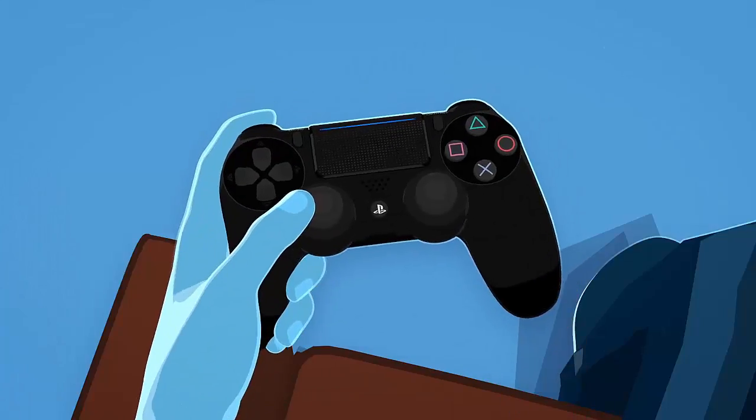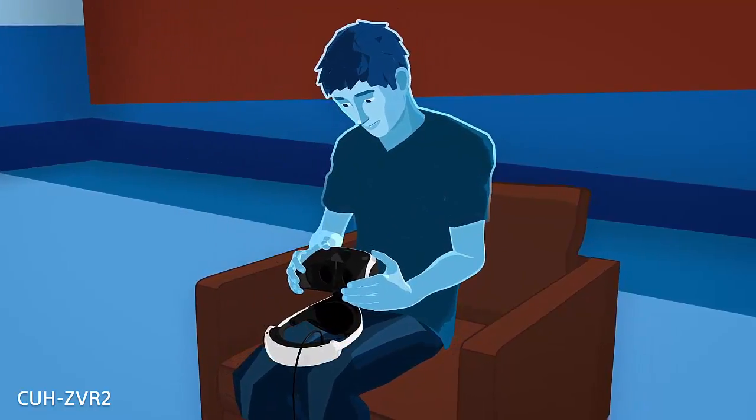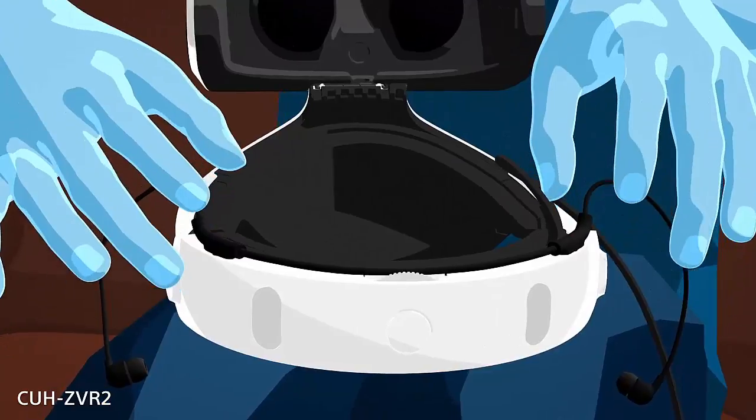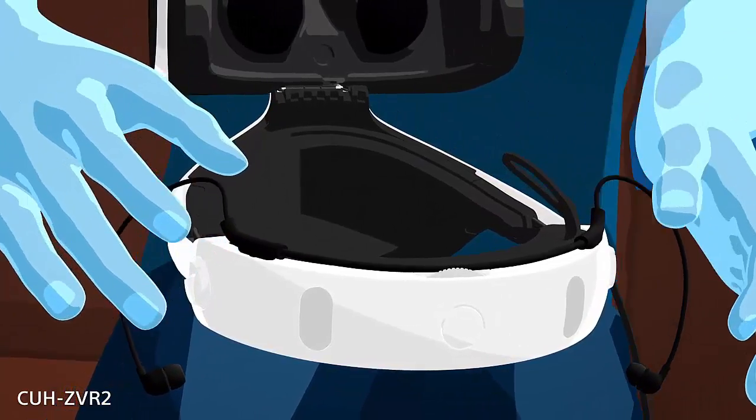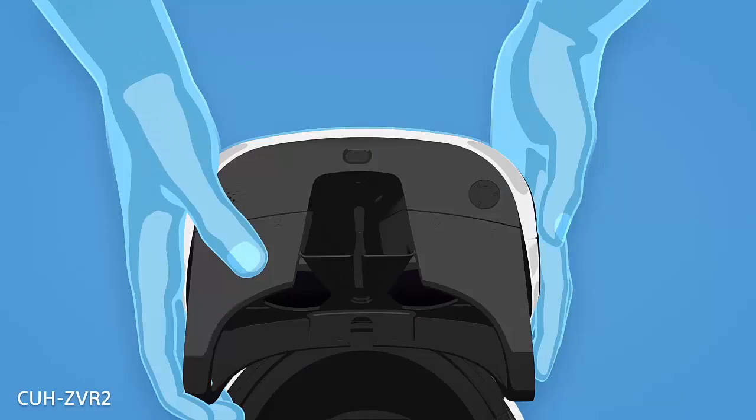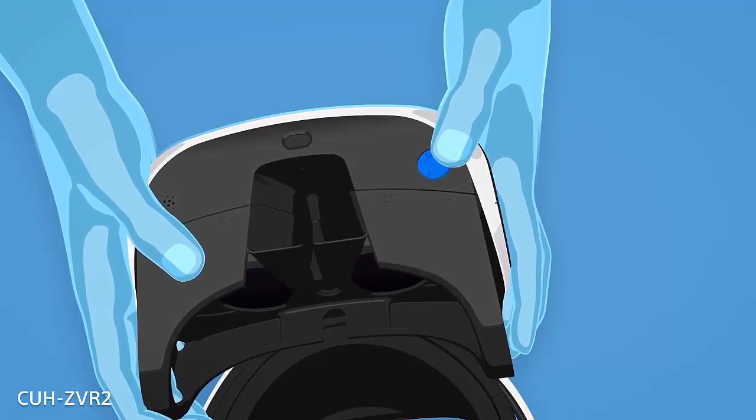Keep your controllers handy. If you have the CUH ZVR 2, you'll first need to connect the stereo headphones to your VR headset. When you're not using your headphones, use the earpiece holders on your VR headset to store them out of the way. The volume and mute buttons are located on the bottom left side of the scope, as well as the power button.